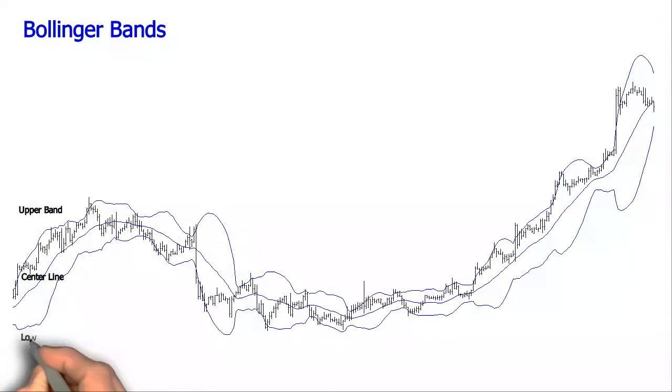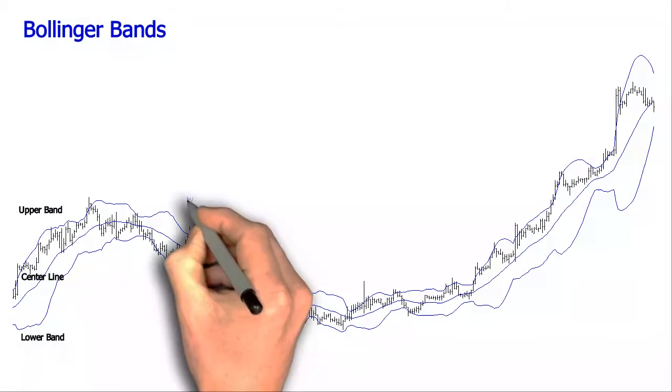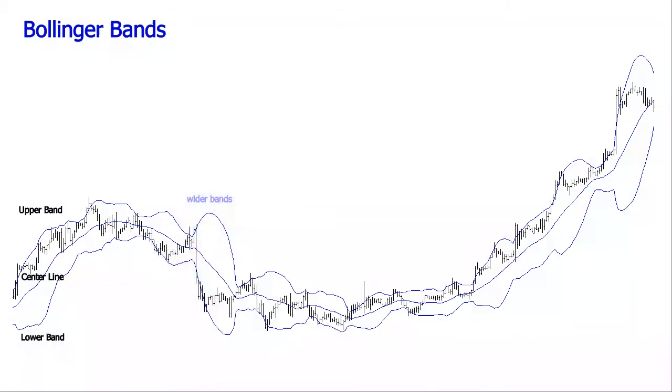When the markets are more volatile, the bands widen. When the markets are less volatile, the bands contract.